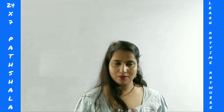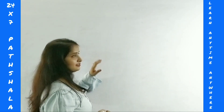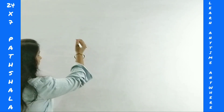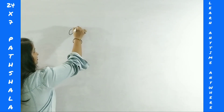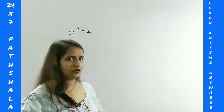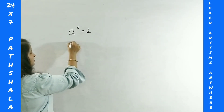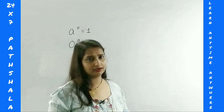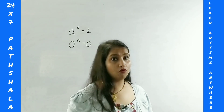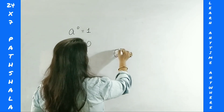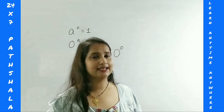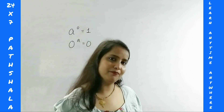Are you also confused about what zero to the power zero is? Let's find out. First, understand what is the problem in finding zero power zero. Anything to the power zero is 1 — no question, no doubt. Or, zero to the power anything is zero — again, clear cut. But what happens when zero to the power zero is calculated? Confused? Let's take help of a calculator and calculate some values.